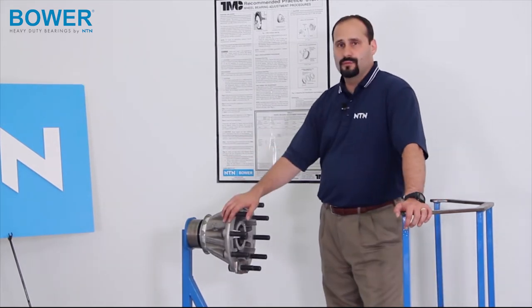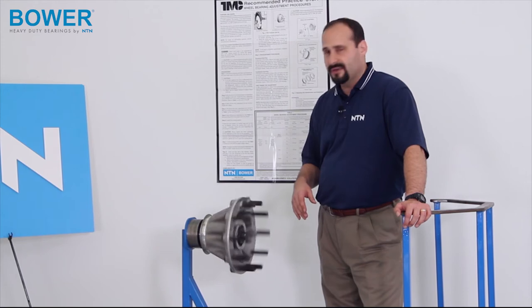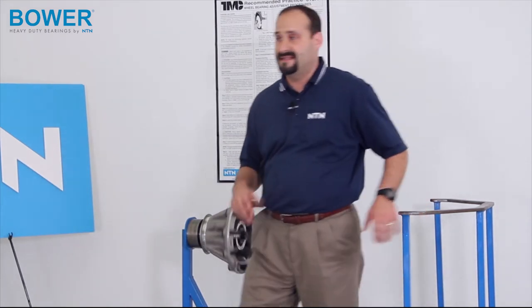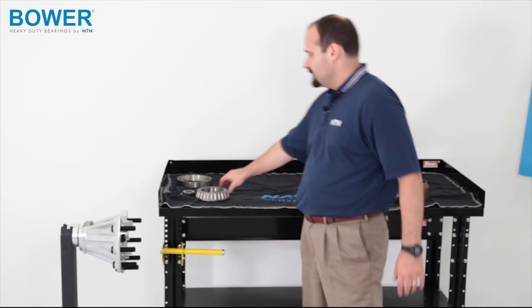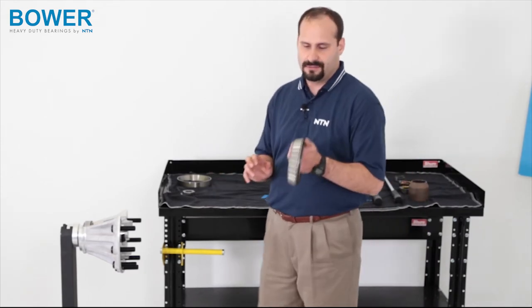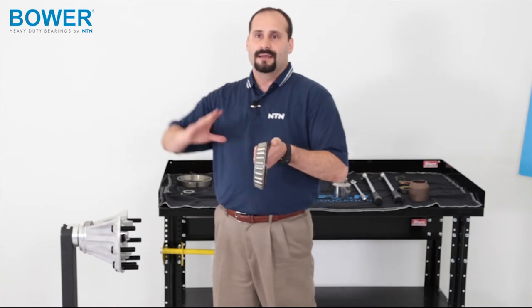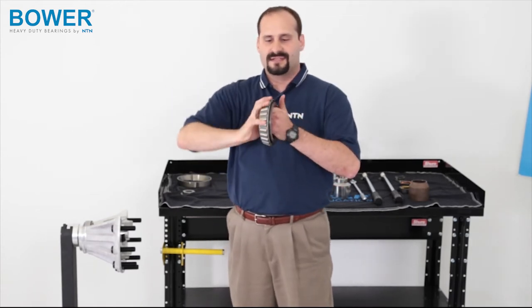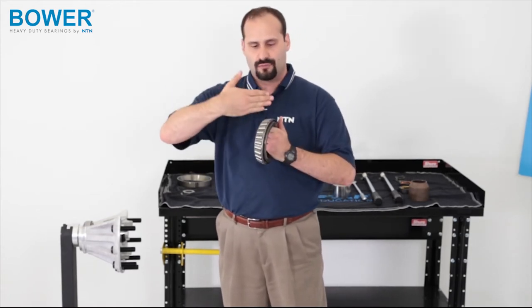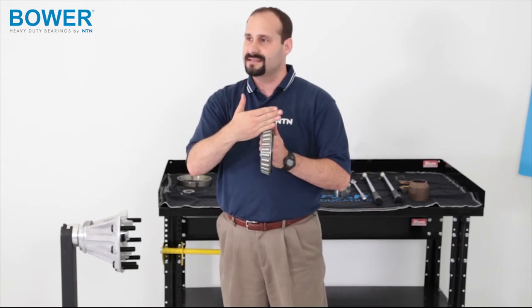The reason we're spinning this wheel is to do what we call seating the rollers in the bearing. What is that? Well, in your bearing, these rollers can be very loose and they can shake around and move around and they can be cocked. To seat them by just simply rotating the bearing, the rollers will line up in the bearing and seat in place.